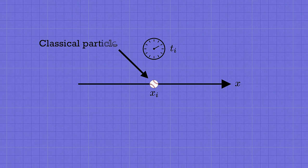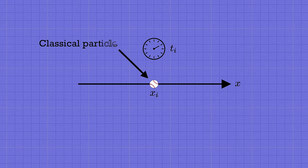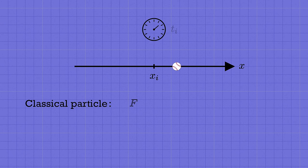Say we've got a particle that starts out at some position xi at an initial time ti. In classical mechanics, our job would be to figure out where the particle is going to be at any later time. We add up all the forces, set that equal to the mass of the particle times its acceleration.